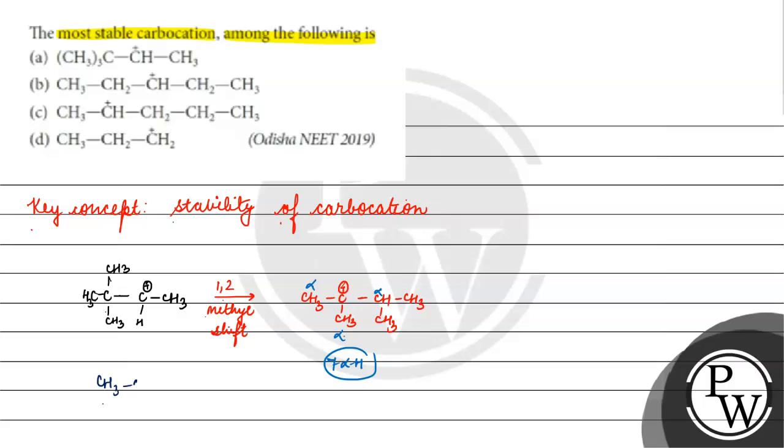Next, in the next one, we have a carbocation. How much alpha H? 4. The higher alpha H, the higher hyperconjugating structure. If we talk about the third, we have CH3-CH+-CH2-CH2-CH3.